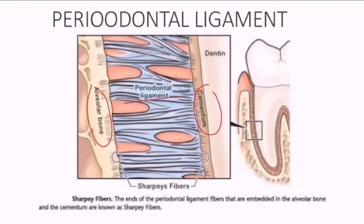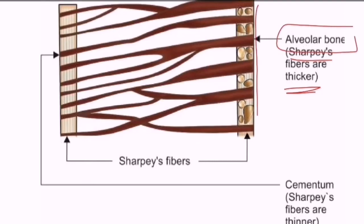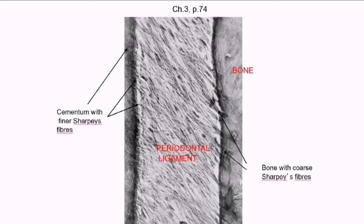Here in the histological picture, you can see the alveolar bone and the cementum, with the periodontal ligament fibers connecting the two. The terminal portions attaching to the alveolar bone and the cementum are called Sharpey's fibers. It is also mentioned in some books that Sharpey's fibers are thicker on the alveolar bone side - the ones connecting to the cementum are thinner, whereas those on the bone side are much thicker.